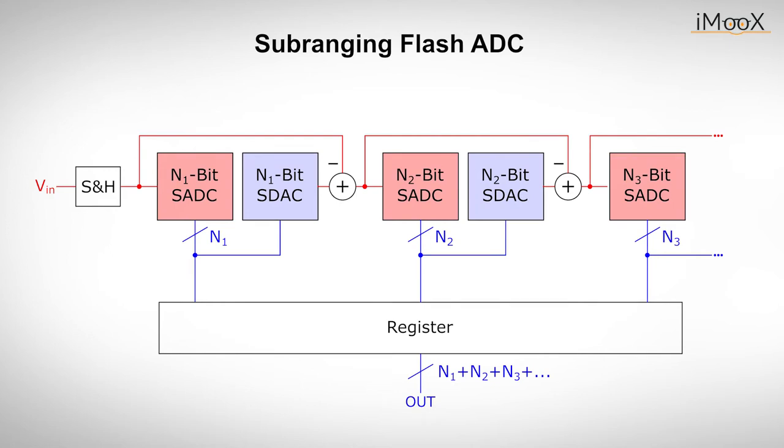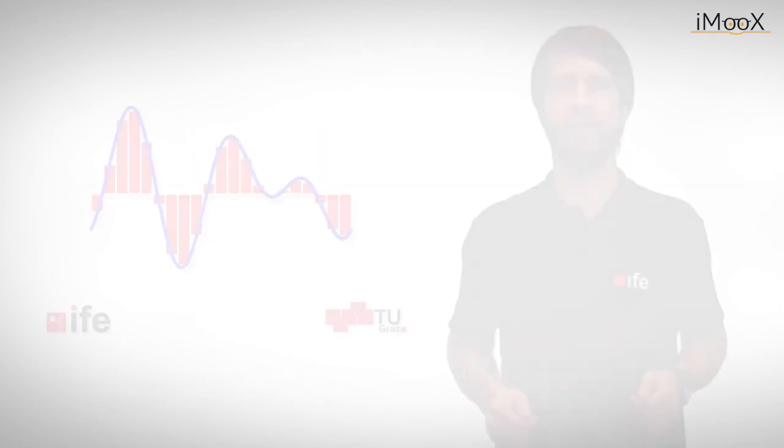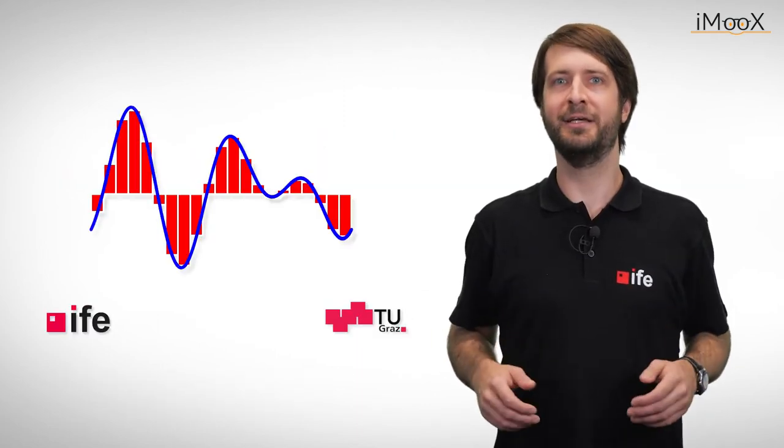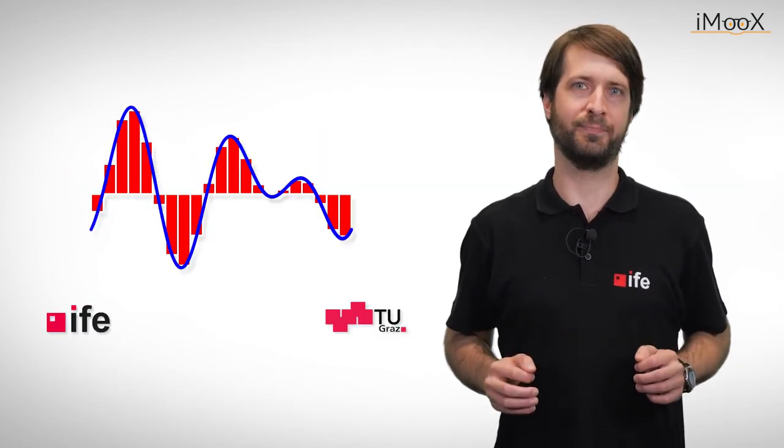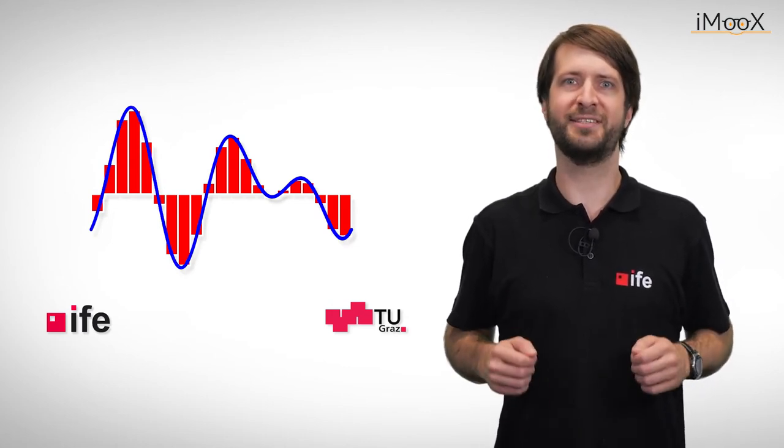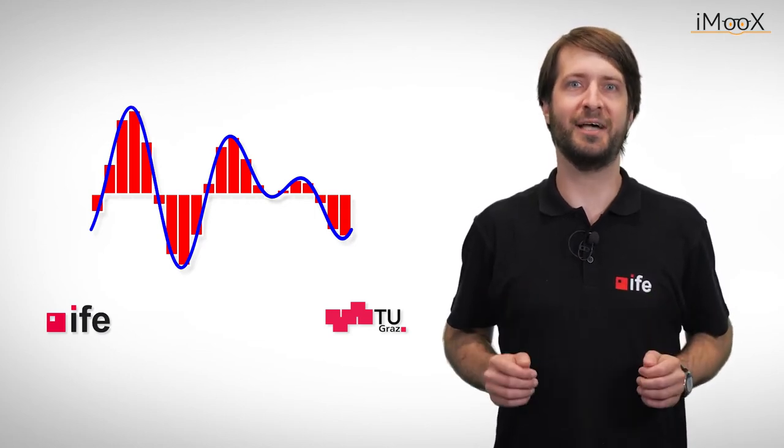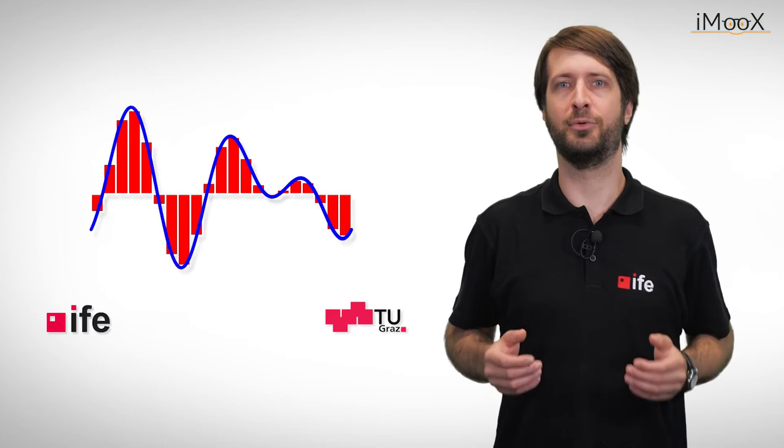With this technique, we can build ADCs with up to 12 bits and sampling rates of some gigasamples per second. The only drawback is the latency at the beginning of the conversion. As you might already guess, it's again a matter of application. Latency might not be a concern in an oscilloscope front end or in some kind of radio application, but it is sure a disaster in fast digital control loops.